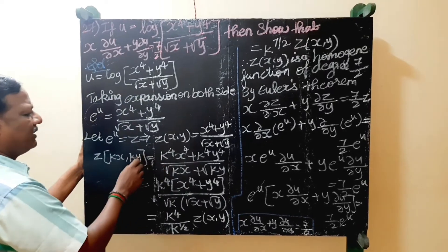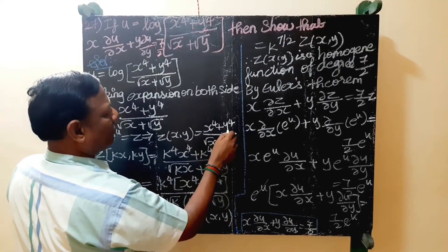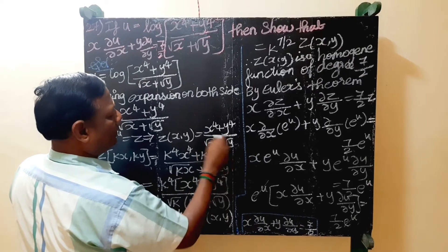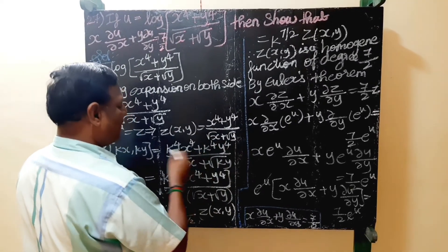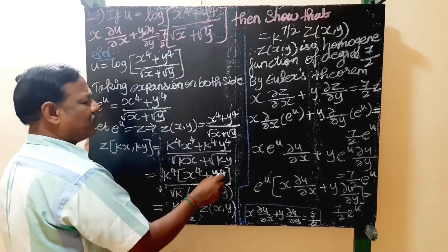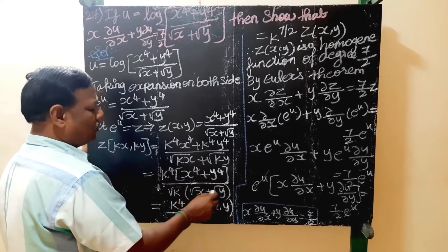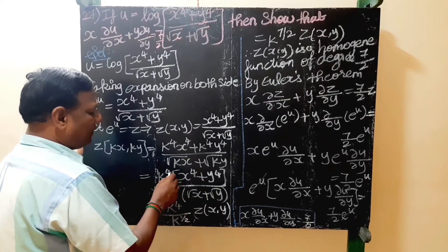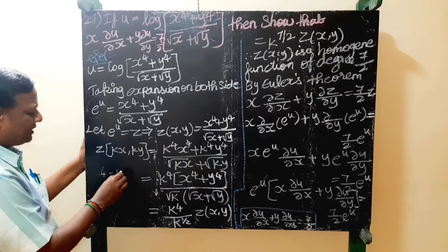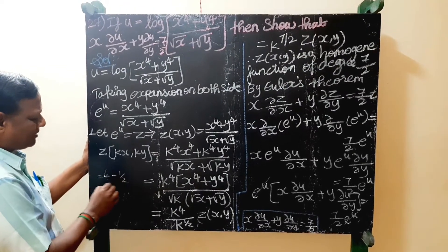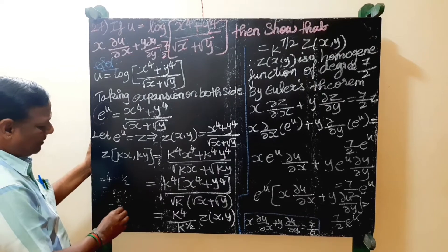Replacing x by kx and y by ky: z becomes (k power 4 x power 4 plus k power 4 y power 4) divided by (root of kx plus root of ky). The numerator has k power 4, the denominator has k power 1 by 2, so the degree is 4 minus 1 by 2, which gives 8 by 2 minus 1 by 2, equals 7 by 2.